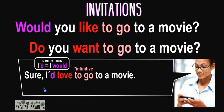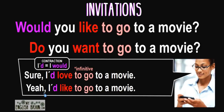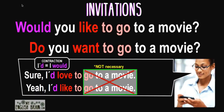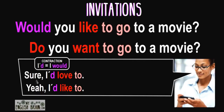Or the person can say: Yeah, I'd like to go to a movie. When we say yes to an invitation, it is not necessary to repeat the entire invitation. We usually just say the short version: Sure, I'd love to. Or: Yeah, I'd like to. But it's very important to use the 'to.'